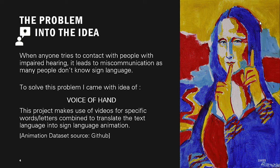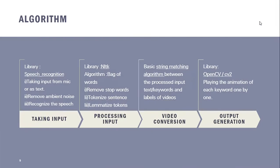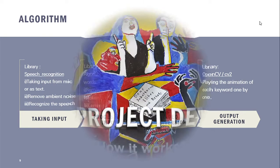The solution I came up with is Voice of Hand. The algorithm takes input either as text or speech. If it is speech, it converts it into text, and then the text is converted into vectors using the bag of words algorithm. The hand gestures of the vector are then shown on the screen using the OpenCV library.